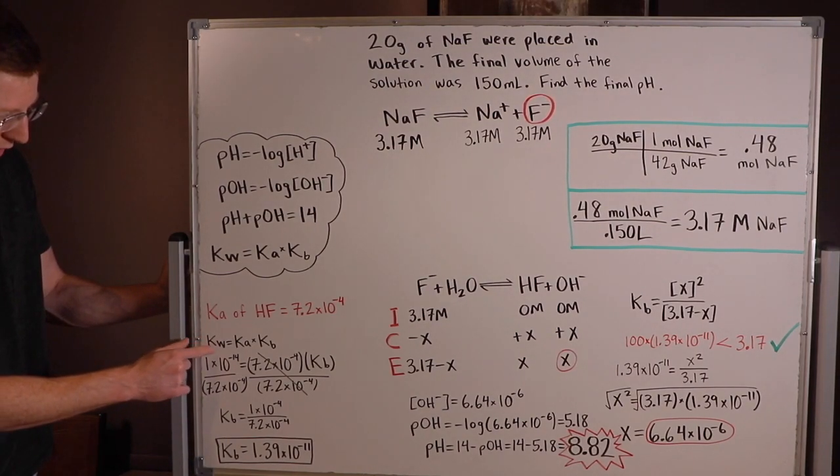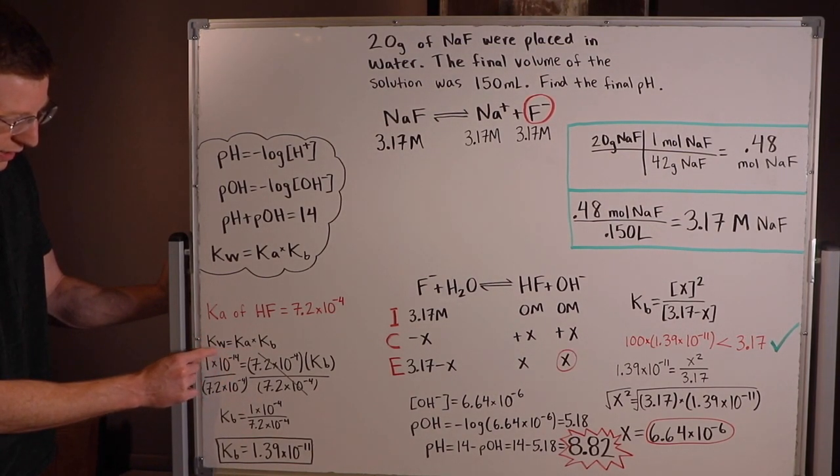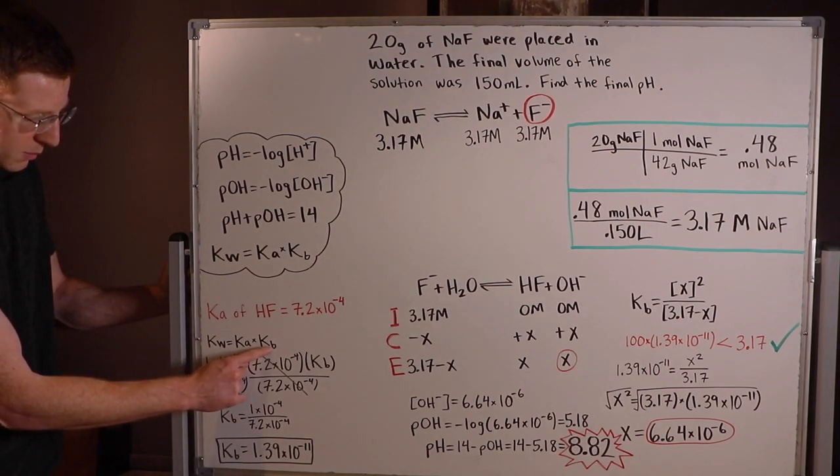So we know the equation relating Ka to Kb looks like this: Kw equals Ka times Kb.